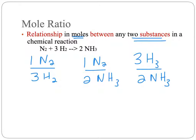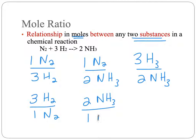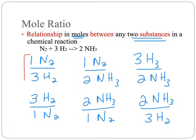The mole ratios can also be put in the other order: three moles of hydrogen to one mole of nitrogen, two moles of ammonia to one mole of nitrogen, or two moles of ammonia to three moles of hydrogen. So we can say one mole of nitrogen reacts with three moles of hydrogen, one mole of nitrogen produces two moles of ammonia, or three moles of hydrogen produces two moles of ammonia. Which one you use depends on what question you're trying to answer.